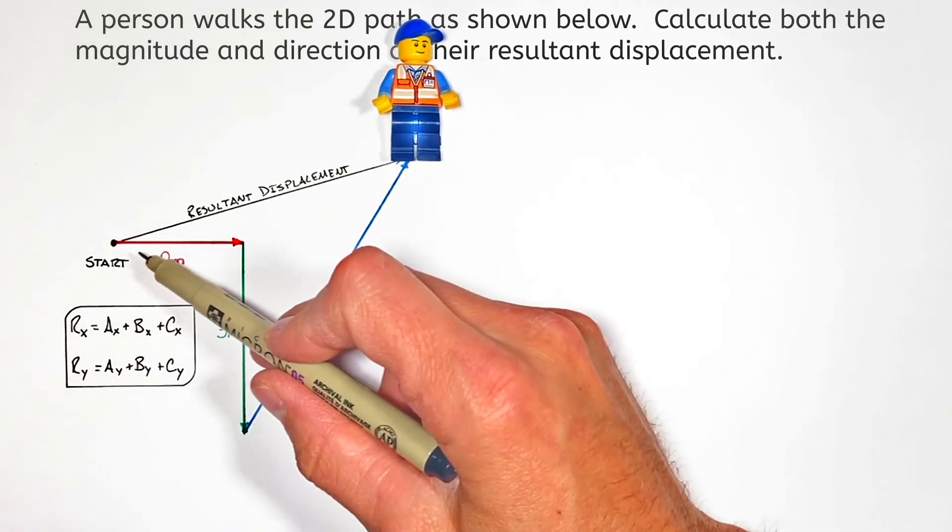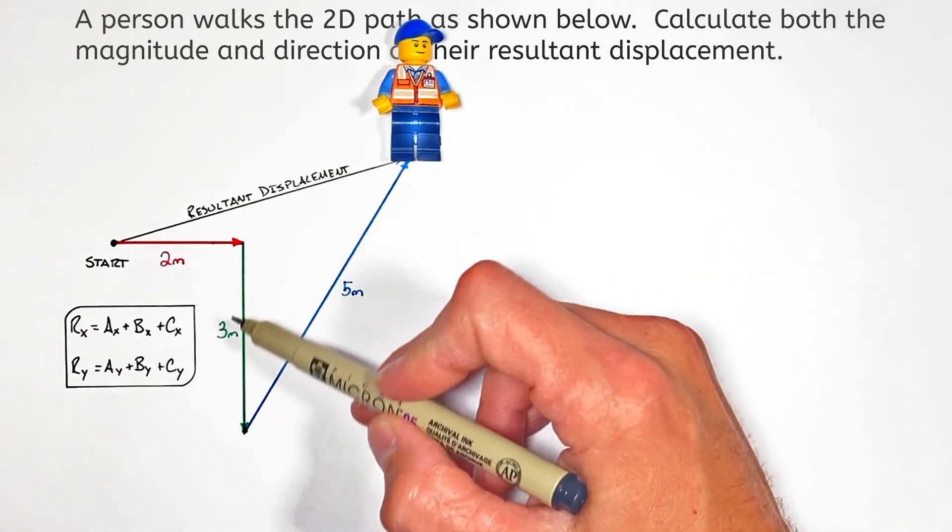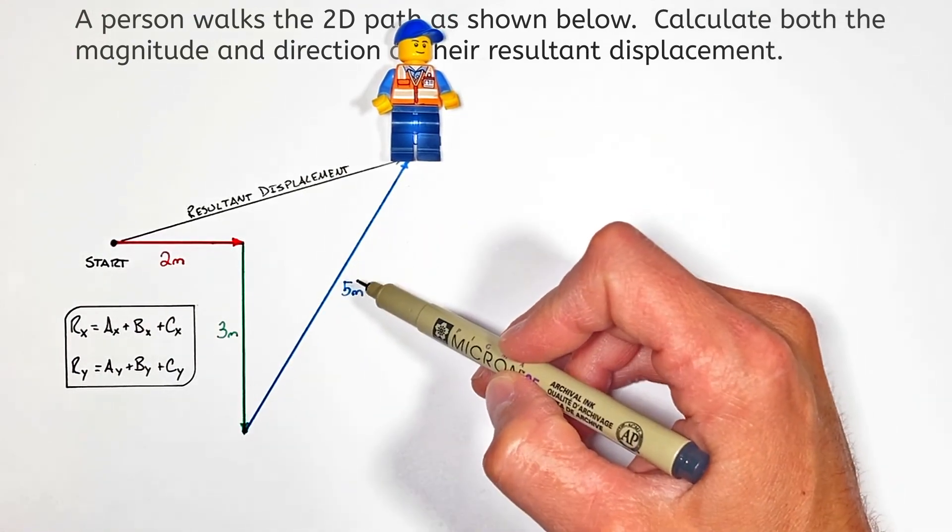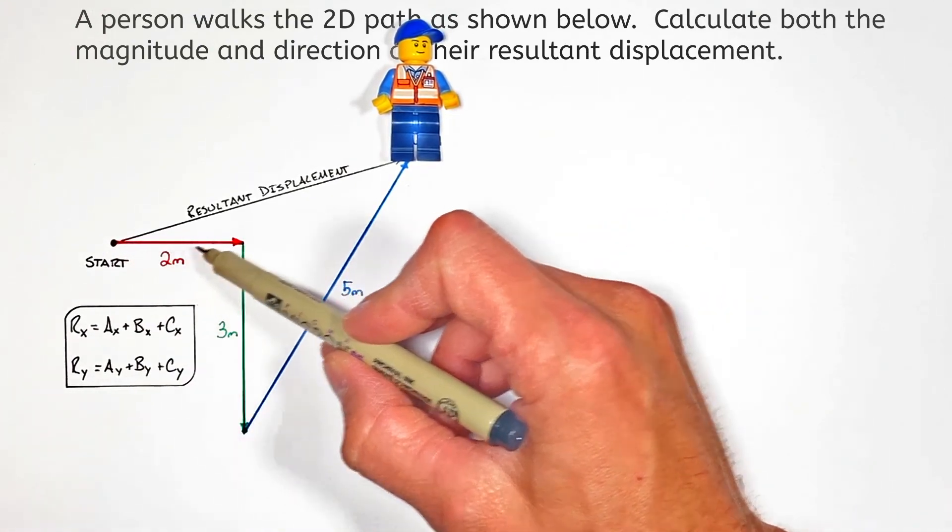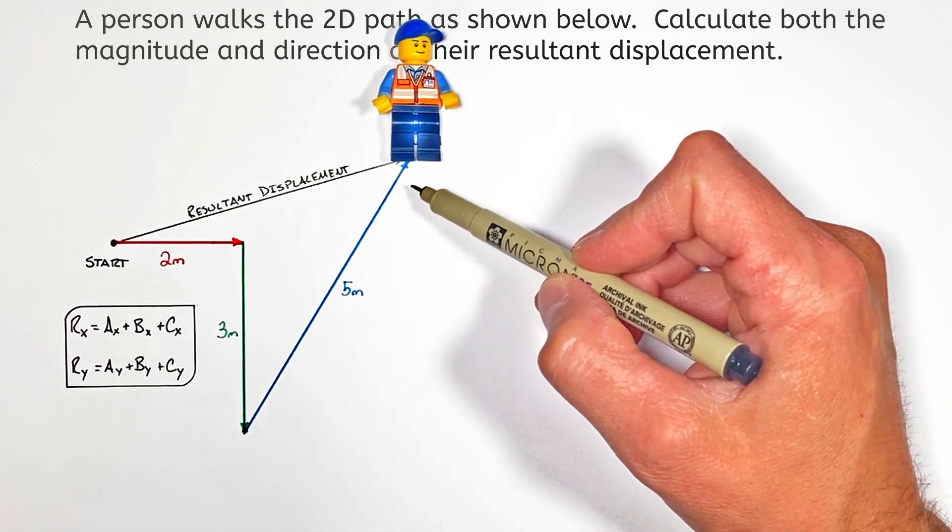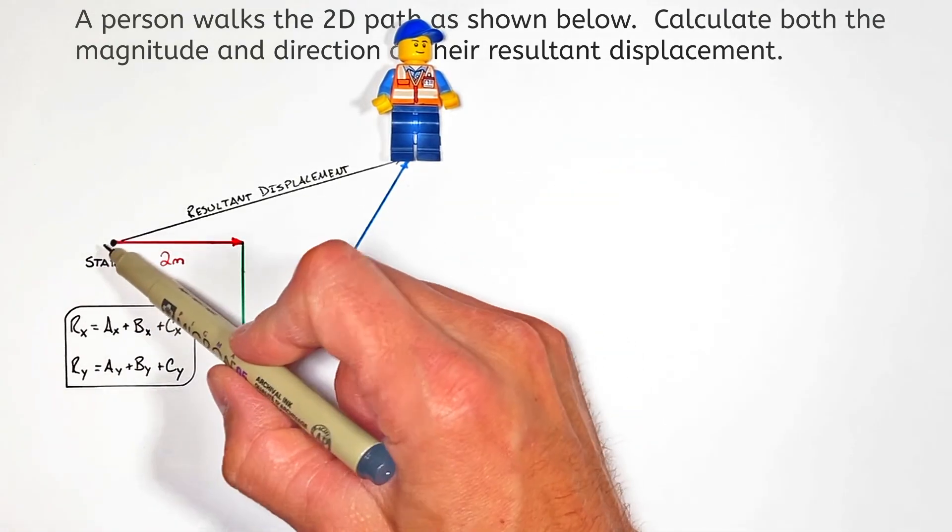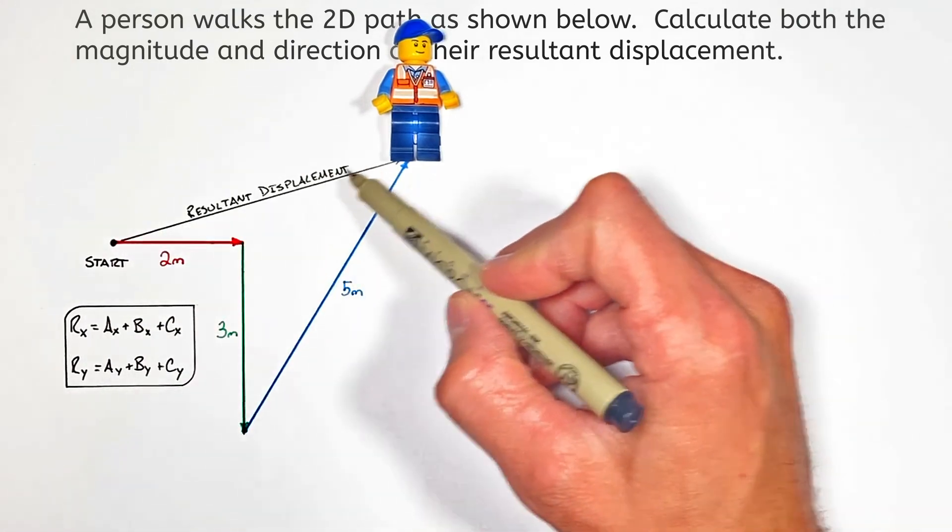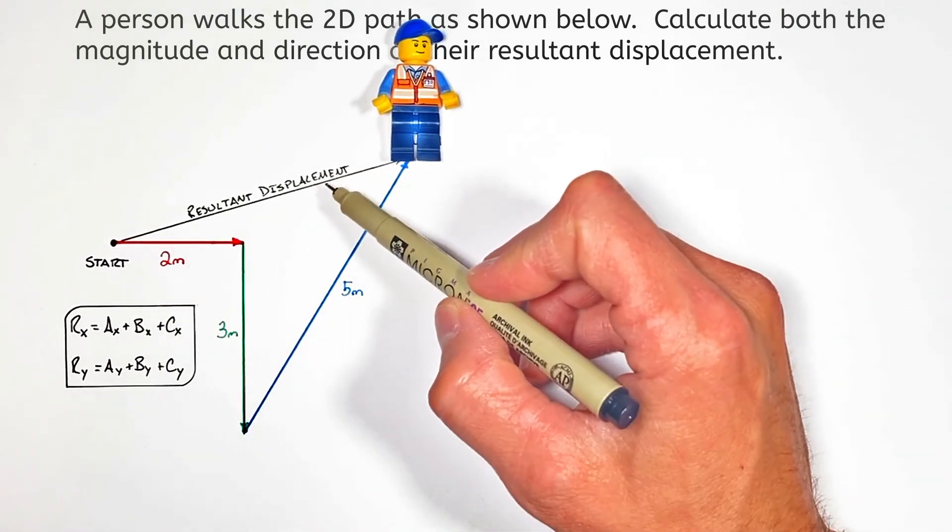Looking at these equations, you might be tempted to simply add together the magnitudes of each of these three vectors, but I think it's pretty clear that if we were to add the lengths of each of these three lines together we'd get a length of 10, and this resultant displacement does not have a length of 10.